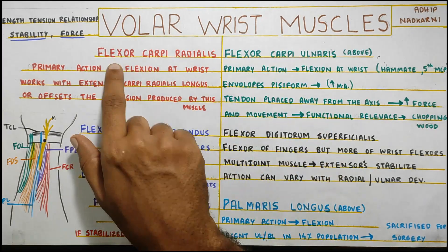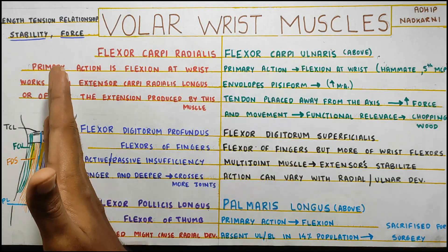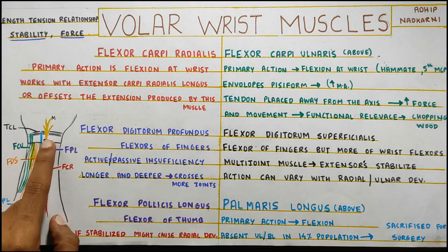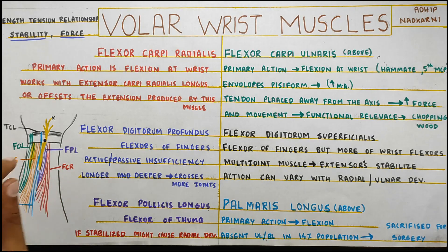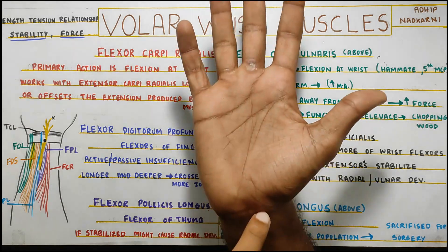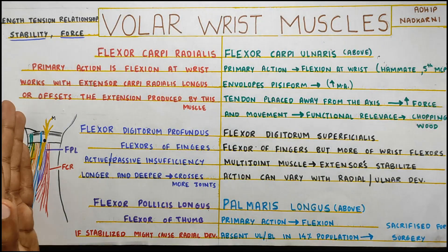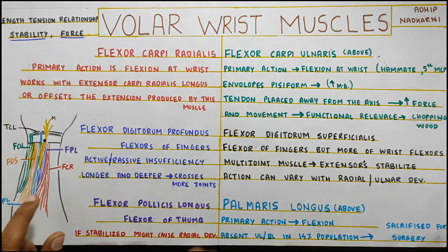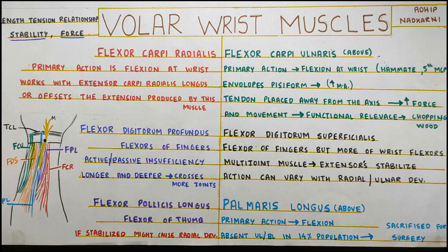First is the flexor carpi radialis. Radialis — so obviously it's on the radial side near the thumb. This red one is the flexor carpi radialis, and this black dot is the axis of the wrist joint around which radial and ulnar deviation happens. Because it is on the radial side, it obviously causes radial deviation, but it is very close to the axis, so it is not very efficient at producing that radial deviation.